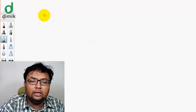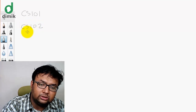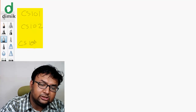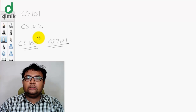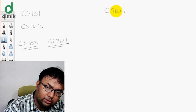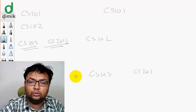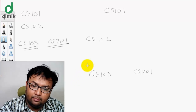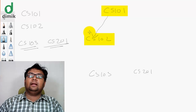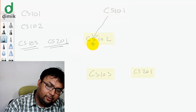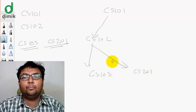Consider a university where there are courses with prerequisites. CS101 must be done before CS102, and CS102 before CS103, and CS201 before CS103. Each course is modeled as a node: CS101 is a node, CS102 is a node, CS103 is a node, and CS201 is a node. We add directed edges — the arrow sign means 101 leads to 102.